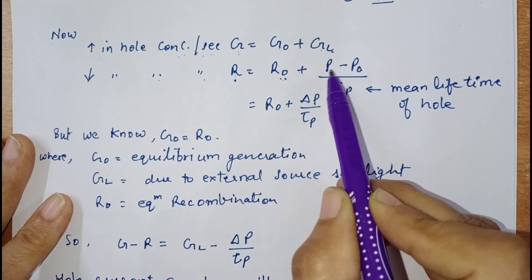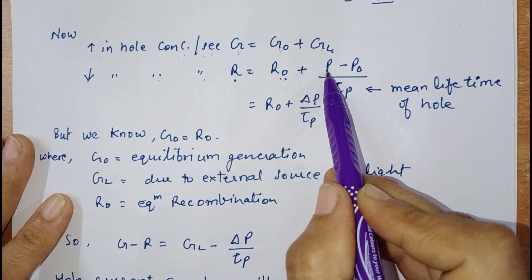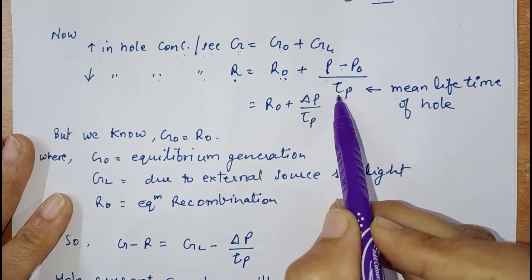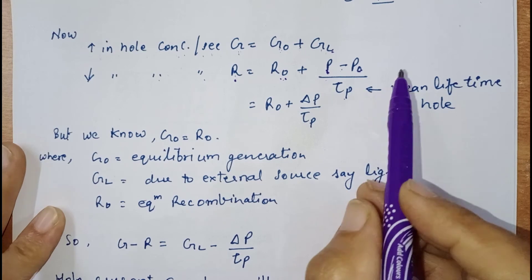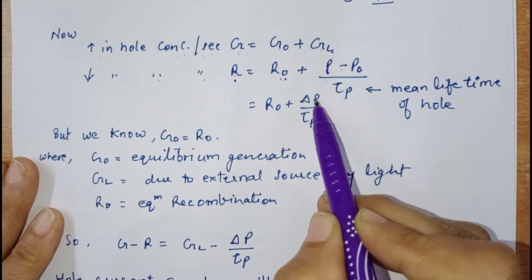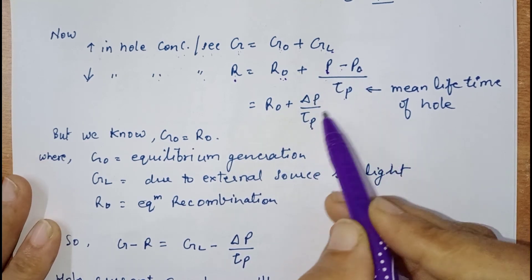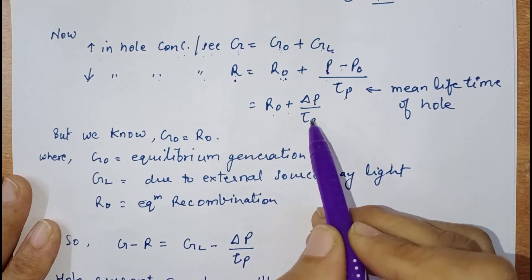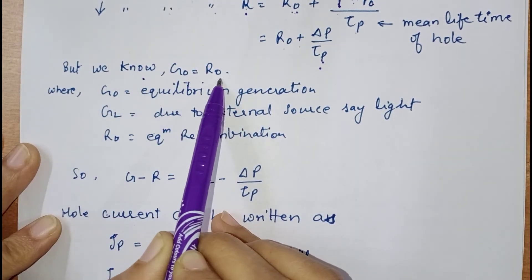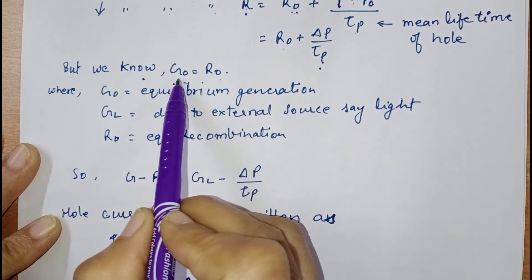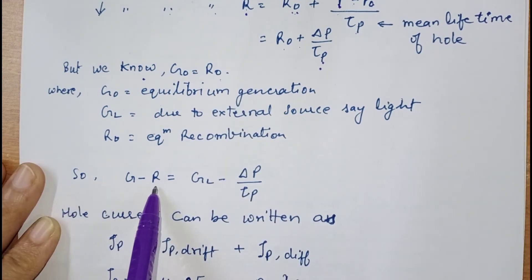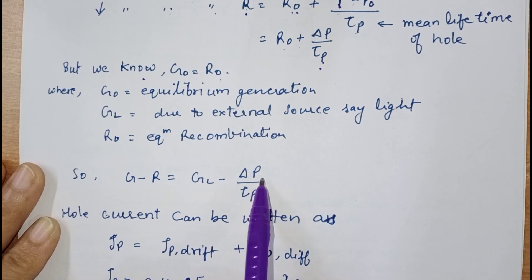Here, p is the hole concentration after the application of an external field such as light, p₀ is the equilibrium concentration, and τp is the mean lifetime of holes — the time for which holes remain in this particular slice. So r = r₀ + Δp/τp. Since at equilibrium g₀ = r₀, these cancel out, giving: g − r = gL − Δp/τp.